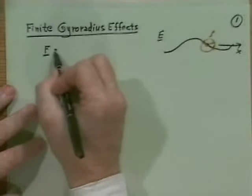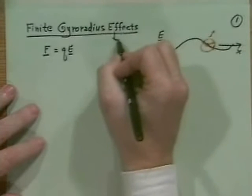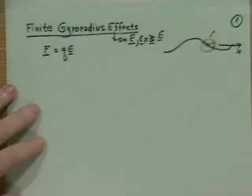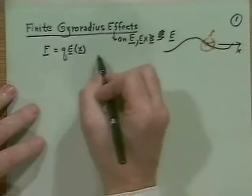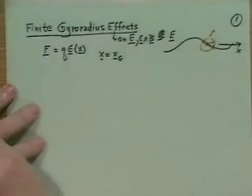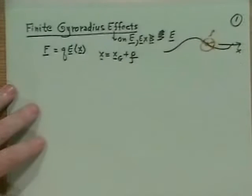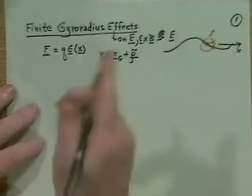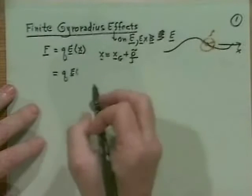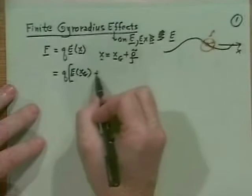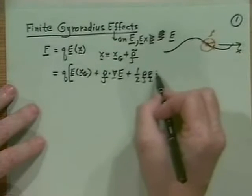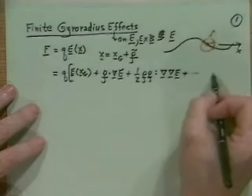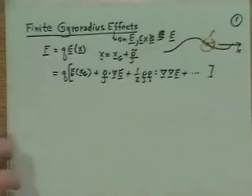The force we're interested in is the Lorentz force on E×B drifts. The electric field is evaluated at the position of the particle, x. The position of the particle equals the guiding center position plus the gyro radius ρ, which is a varying quantity — it gyrates around the field line. We can evaluate this as E at the guiding center, do a Taylor series expansion: E(x_gc) + ρ·∇E + ½ ρρ:∇∇E + ..., where ∇∇E is a third-rank tensor — horrible to calculate, so we won't go there.